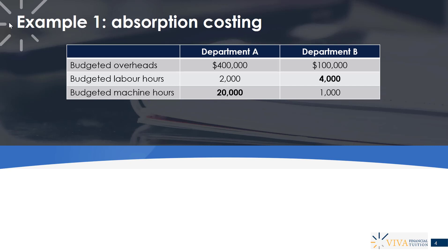Department A is clearly machine intensive — the vast majority of work is carried out by the equipment — so we'll use the 20,000 machine hours as our budgeted level of activity when working out the overhead absorption rate. Department B is clearly a labour intensive department because the budgeted labour hours for the period are 4,000, where they're only expected to use 1,000 machine hours. So when working out the overhead absorption rate for Department B we'll use the budgeted labour hours of 4,000.